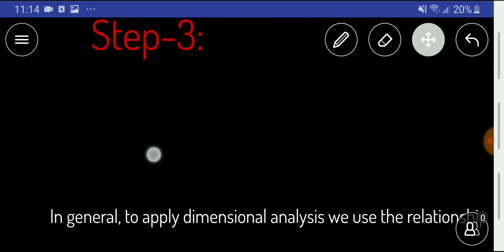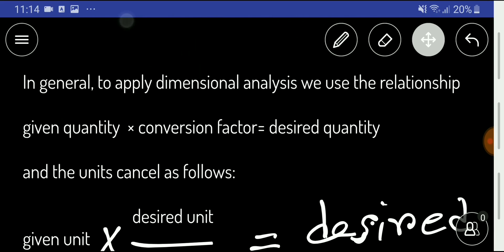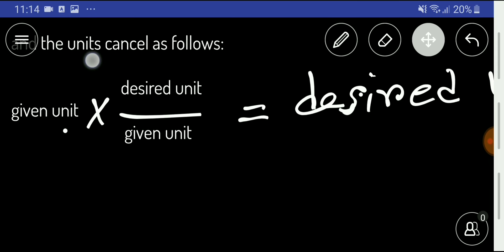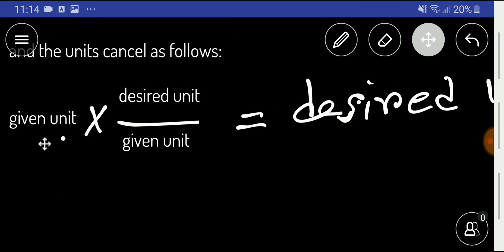In the third step: given quantity times conversion factor, then we will get the desired quantity. To cancel units, we need given unit times desired unit divided by given unit. This given unit will cancel out and we'll get the desired unit.